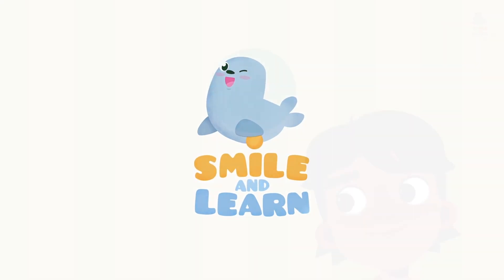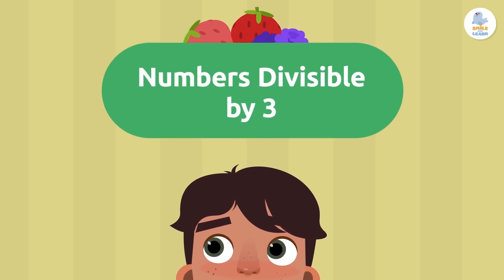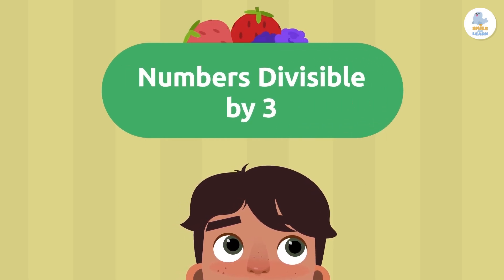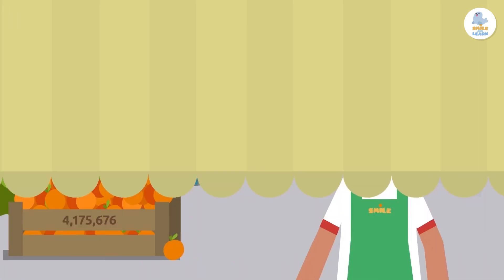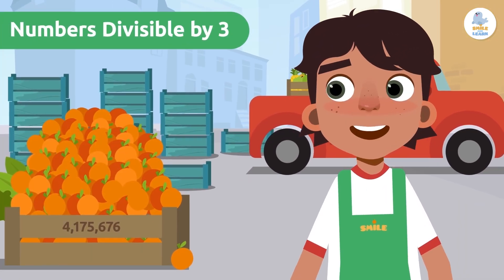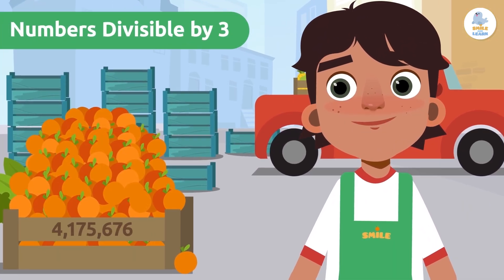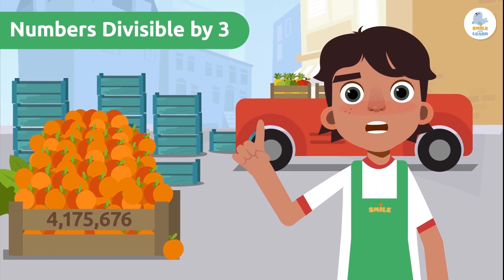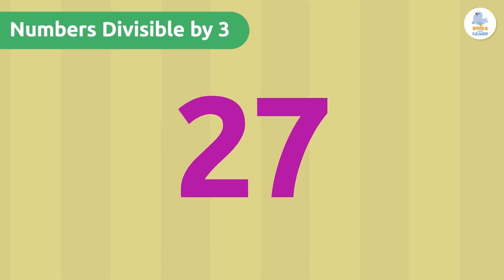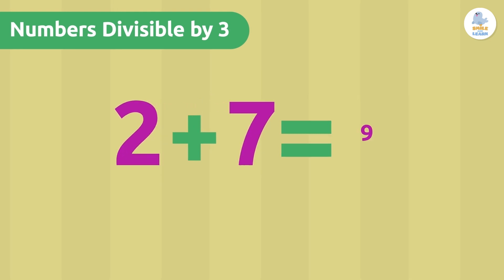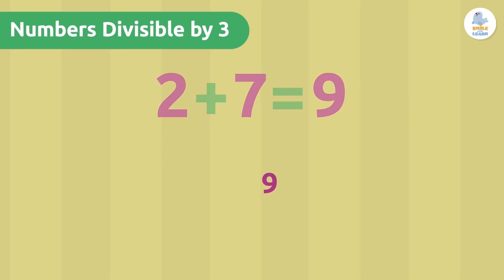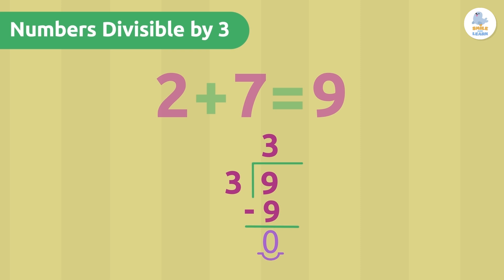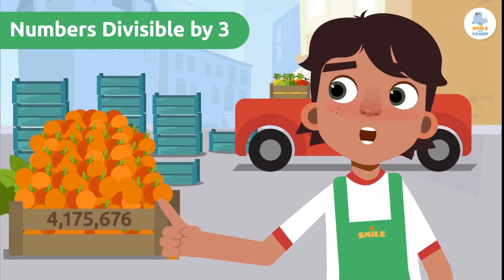Smile and Learn: numbers divisible by 3. I want to put three oranges in each box to find out if a number can be divided by three. There's a neat trick — we have to add up all the digits, and if the result is divisible by three, then the original number is too. Let's see what happens.